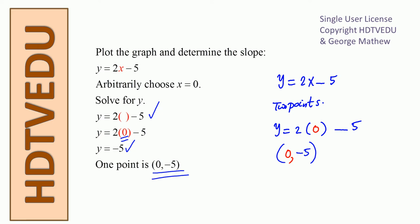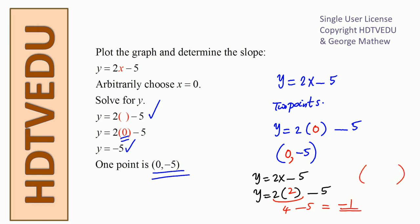So what is our point? x comes first: 0, and y is negative 5. Again, y is equal to 2x minus 5. How do we get the next point? You can substitute x equals 2. So y is equal to 2x minus 5. In the space occupied by x, we substitute x equals 2. What is 2 times 2? It is 4. So what is 4 minus 5? Negative 1. So what is our point? x comes first, y is negative 1. So we have 2 points: (0, negative 5) and (2, negative 1).